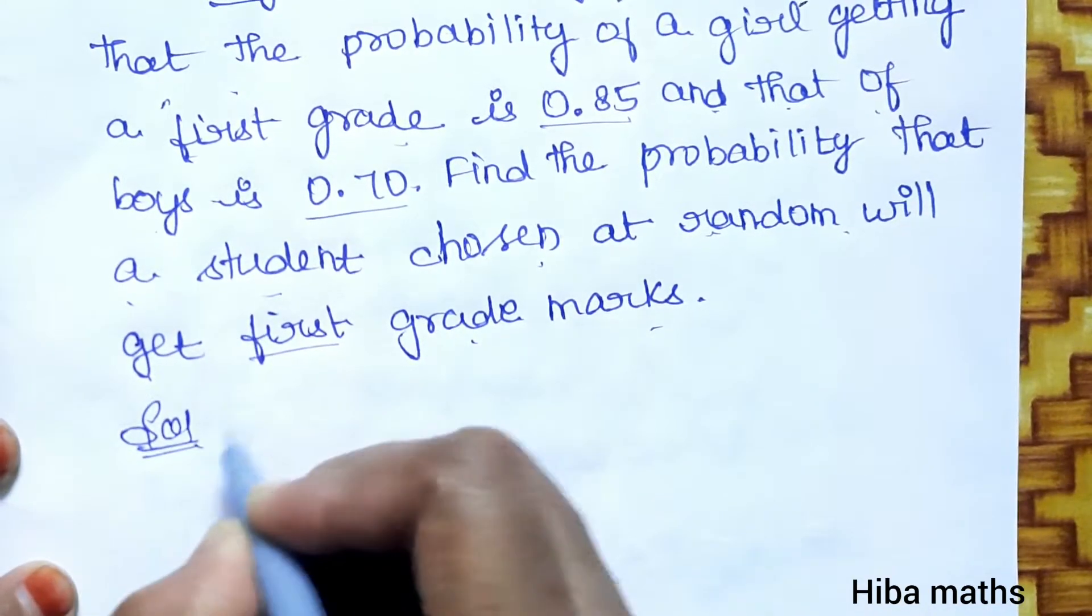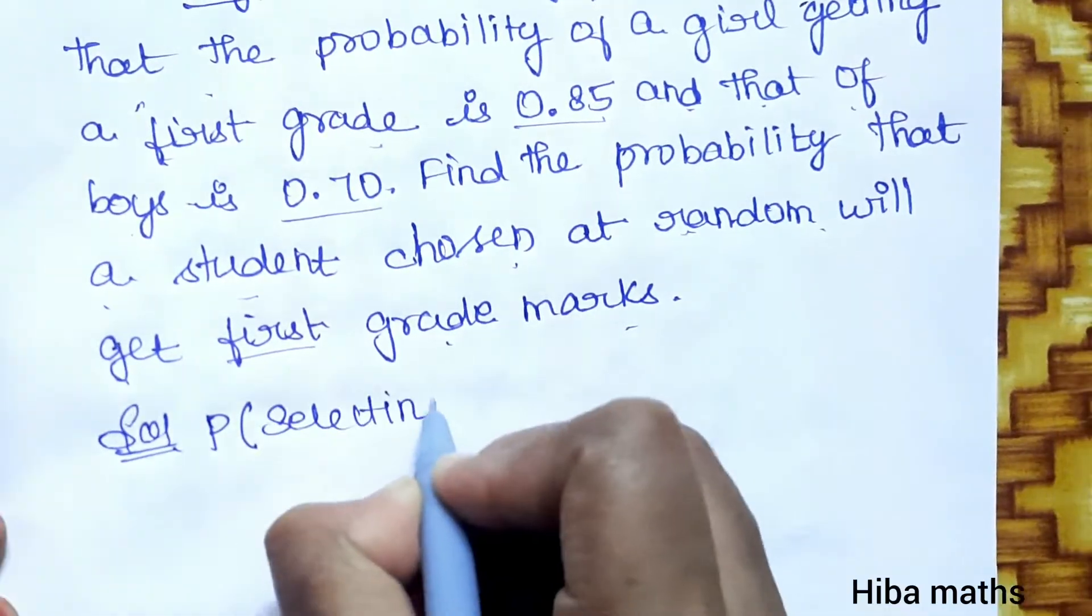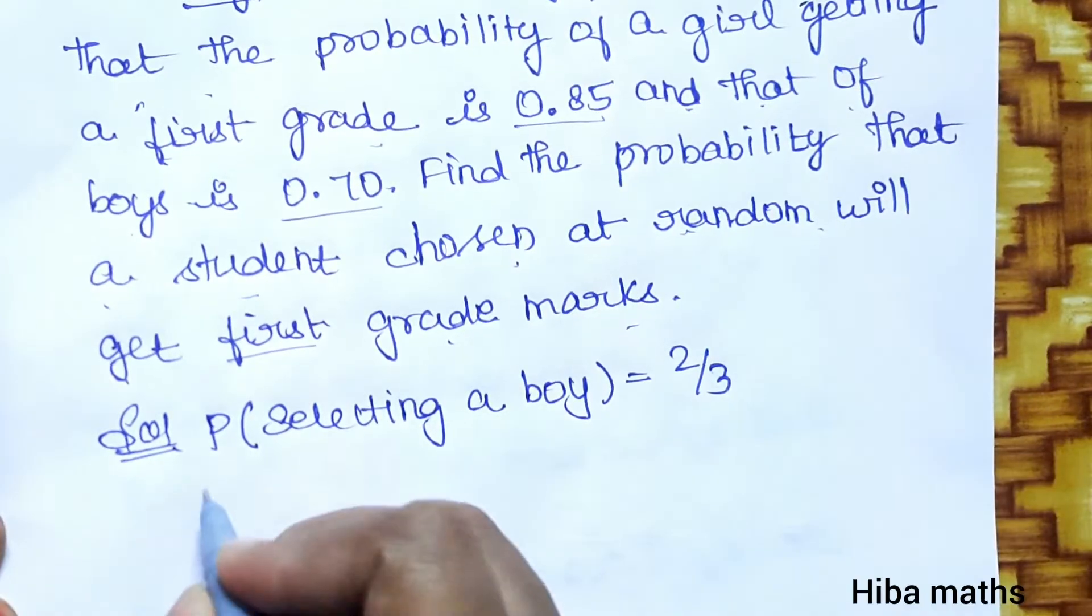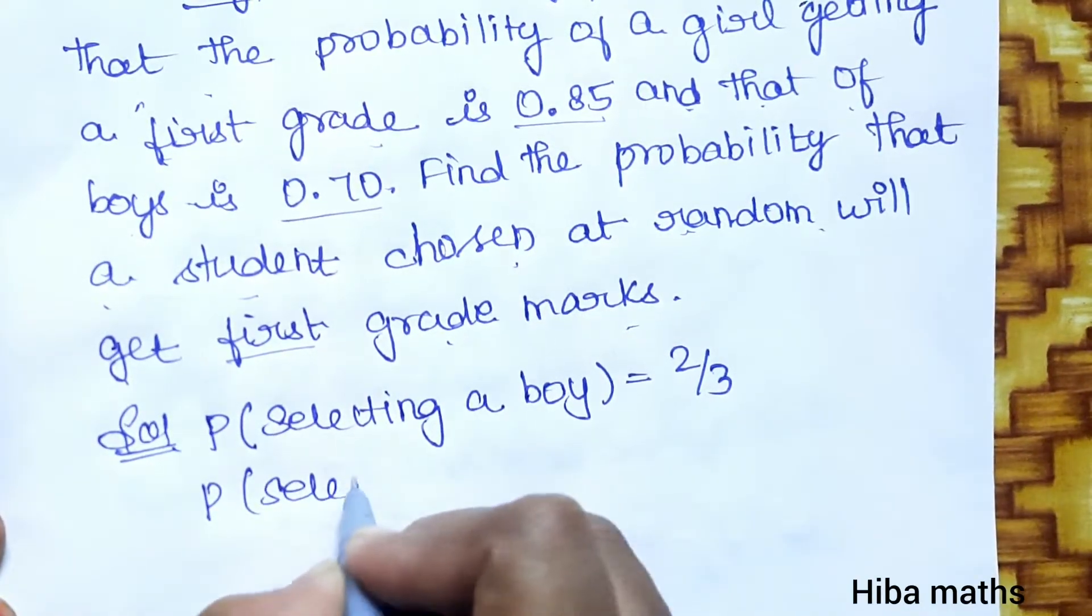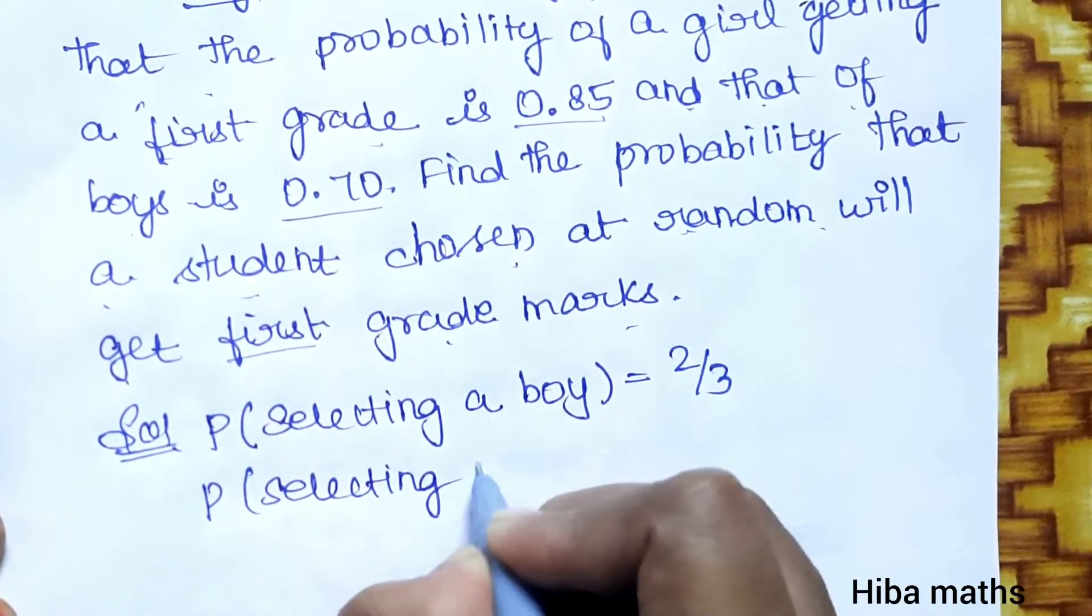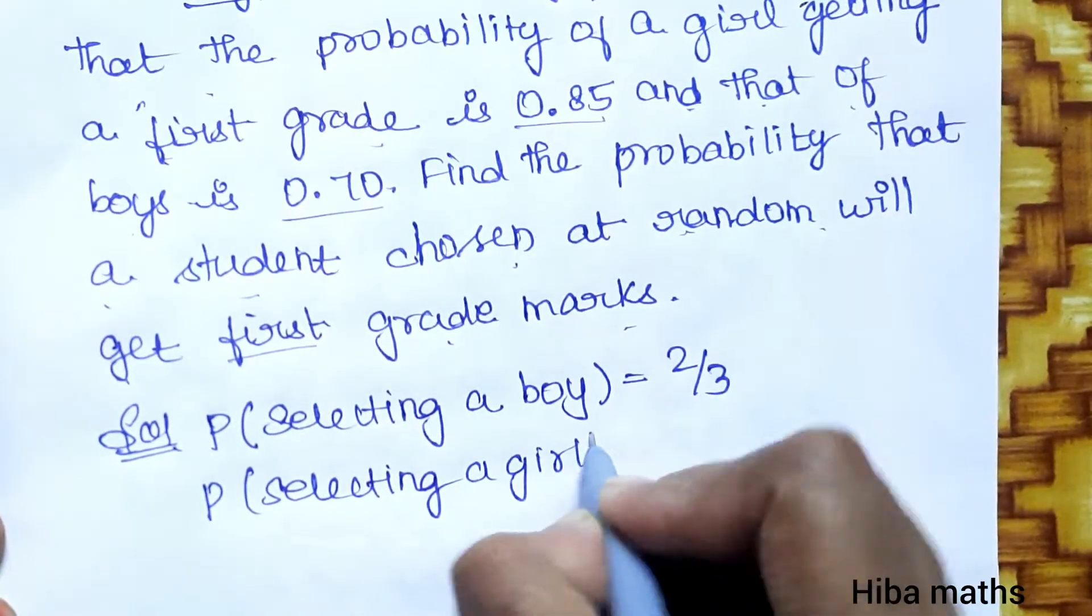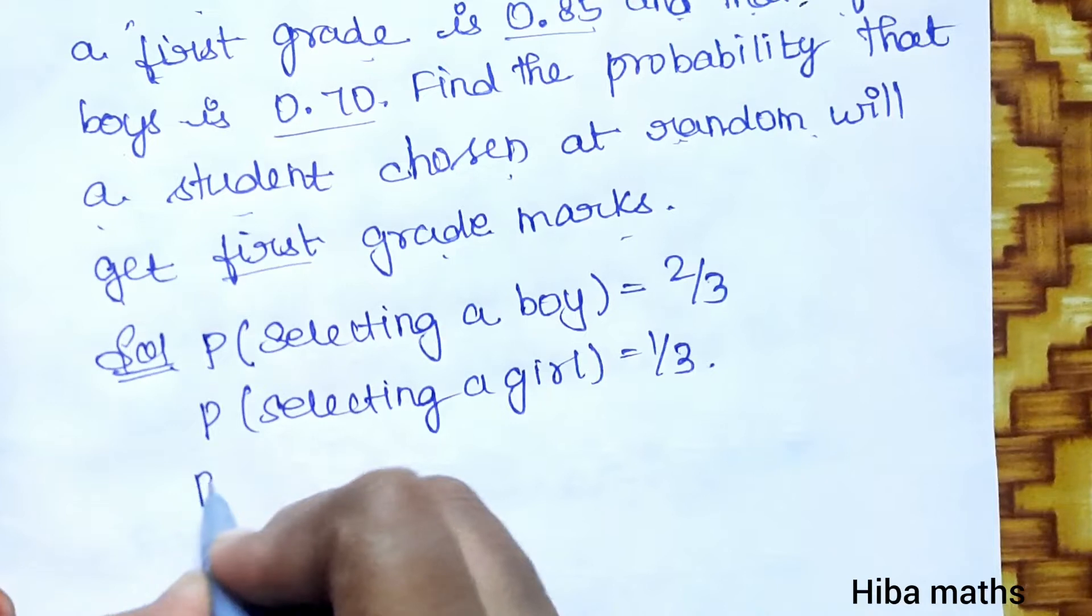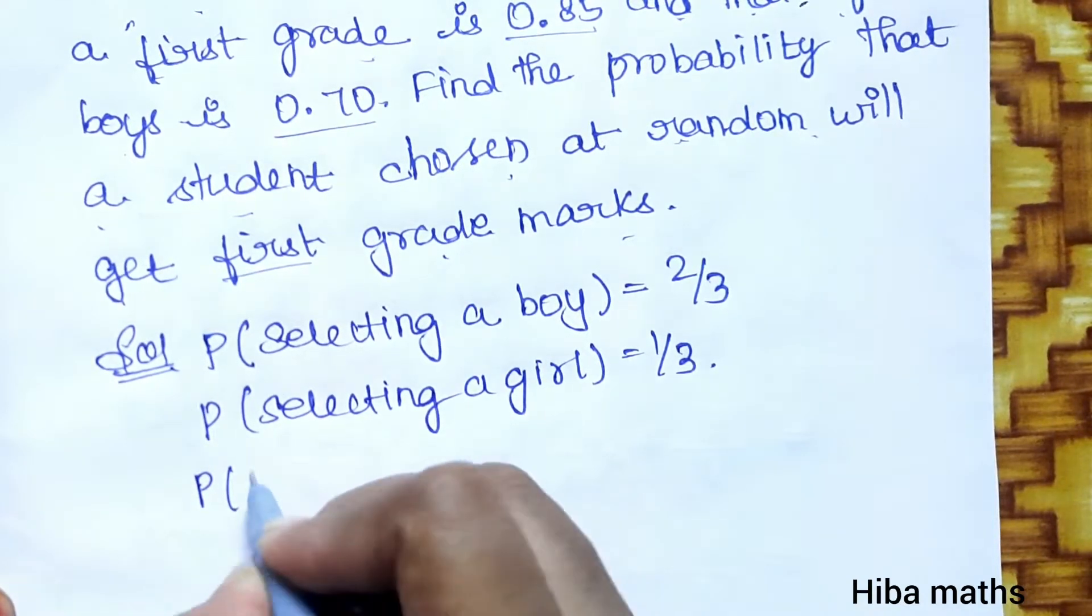In the solution, P of selecting a boy equals 2/3, P of selecting a girl equals 1/3.